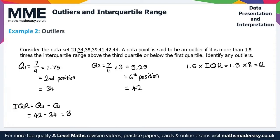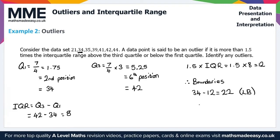We can now calculate the outlier boundaries. The lower boundary is Q1 minus 12, so 34 minus 12 = 22. The upper boundary is Q3 plus 12, so 42 plus 12 = 54.